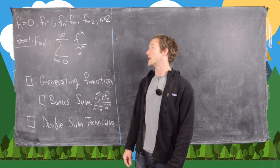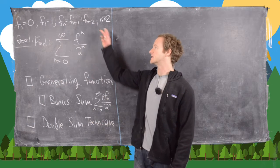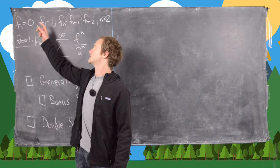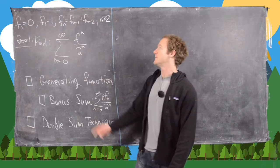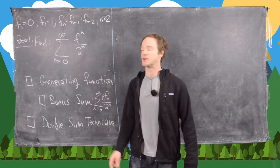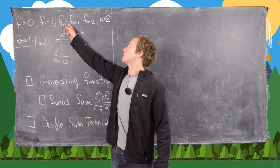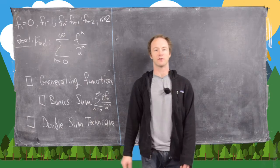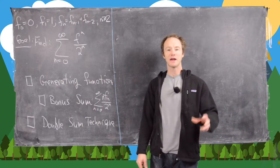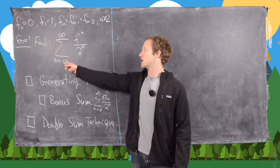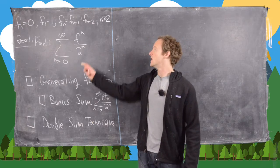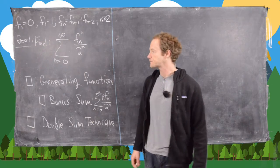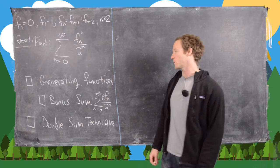In this video we consider the Fibonacci numbers, defined by the well-known recursion: f(0)=0, f(1)=1, and f(n) = f(n-1) + f(n-2) for all n ≥ 2. Our main goal is to find the sum from n=0 to infinity of f_n / 2^n, and we're going to do this two different ways.